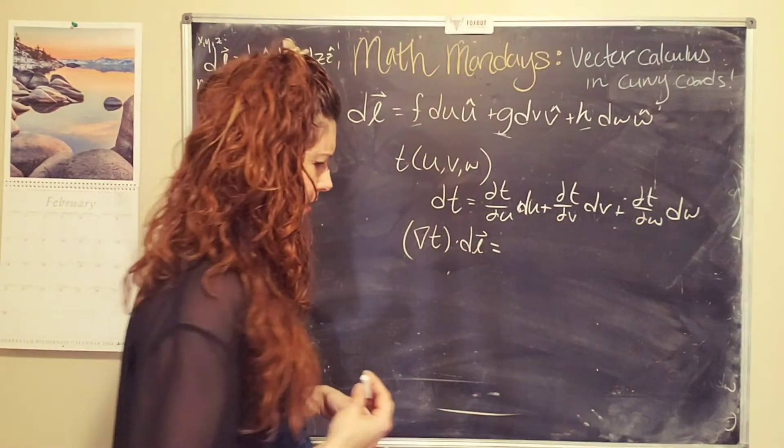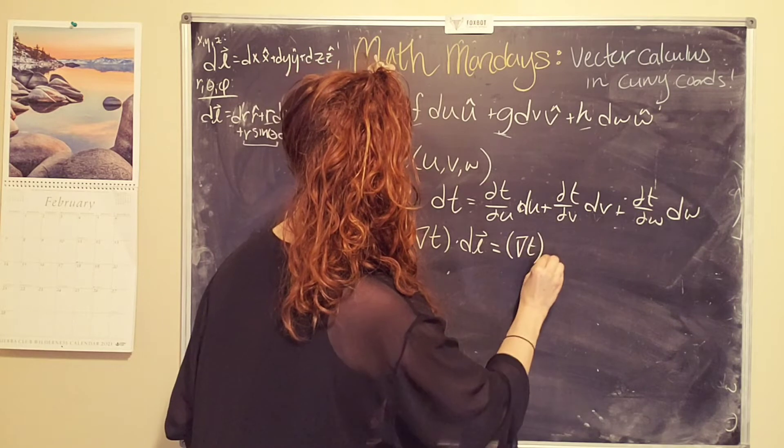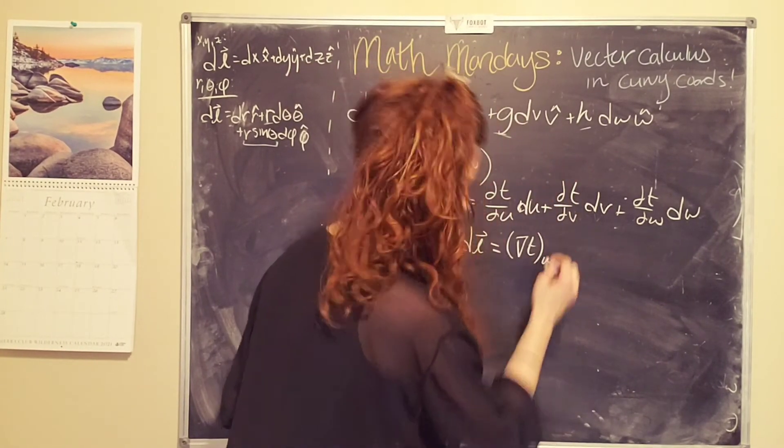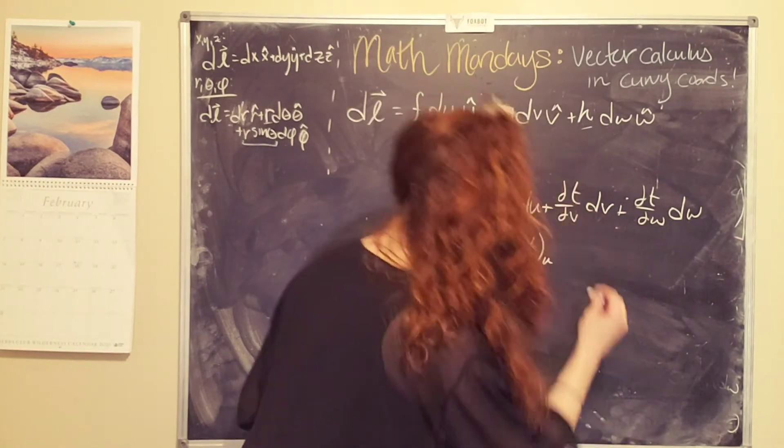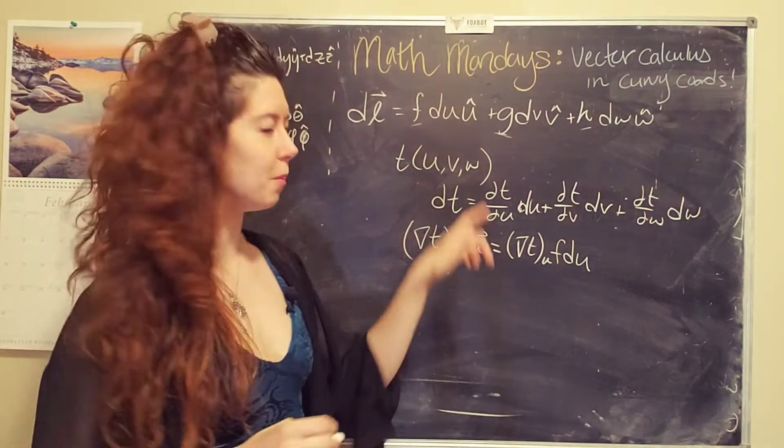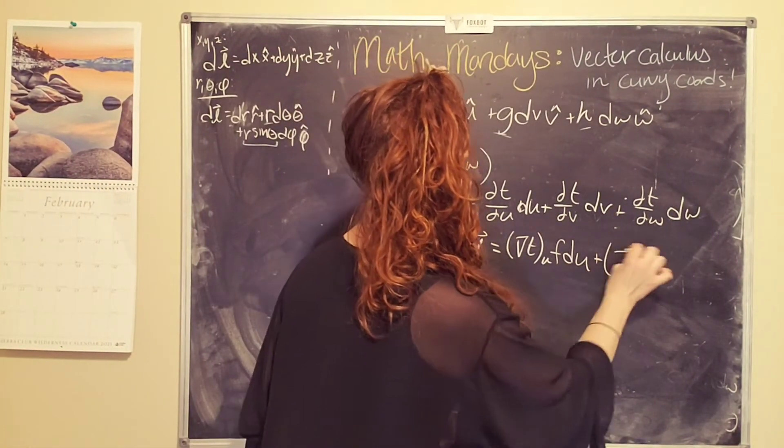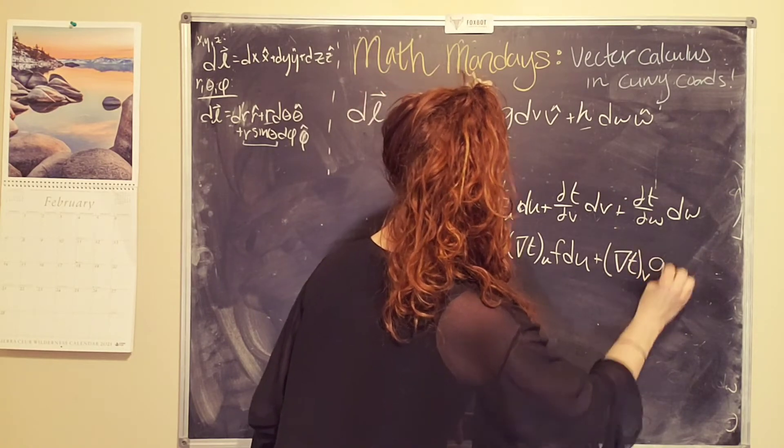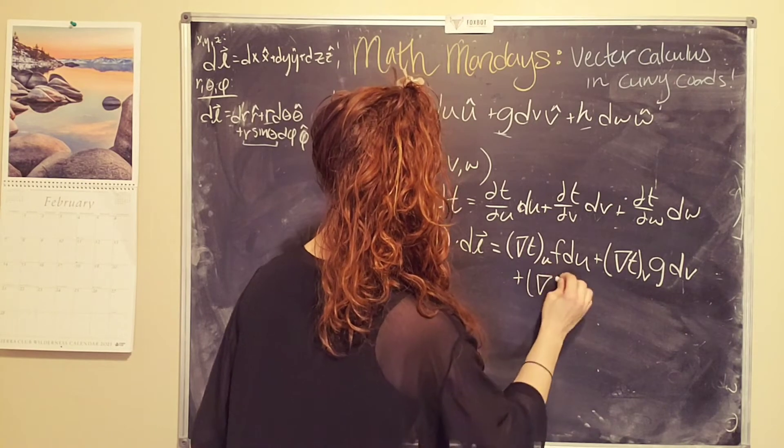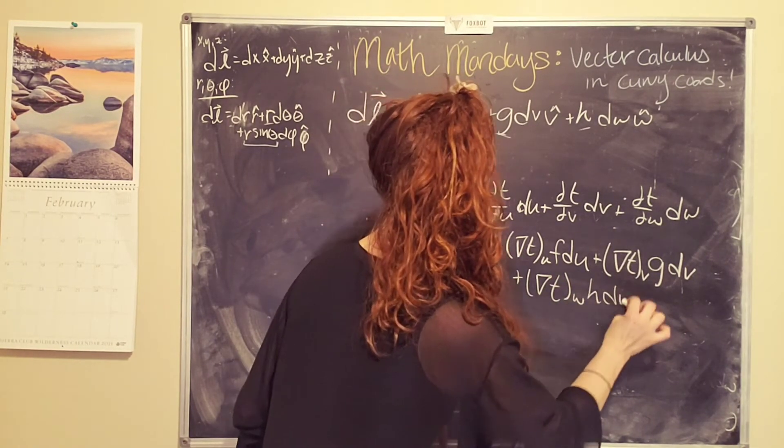So if I do that, then what I am going to get is the gradient of t in the u direction times f du, plus the gradient of t in the v direction times g dv, plus dt dv, plus dt in the w direction, times h dw.